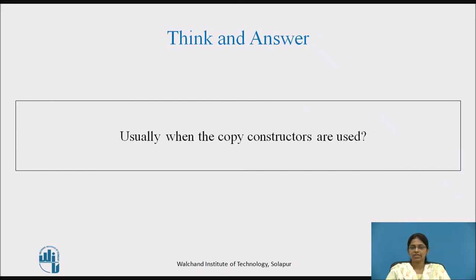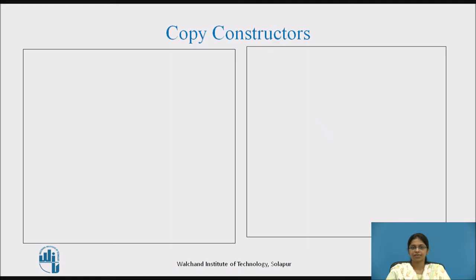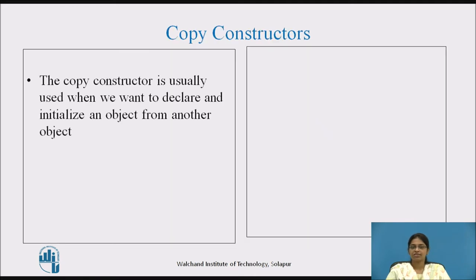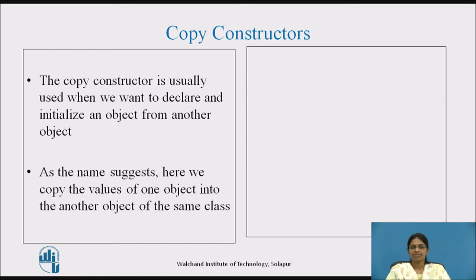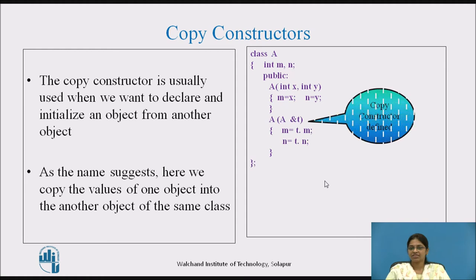When are copy constructors usually used? Copy constructors are used when we want to declare and initialize an object from another object — here we copy the values of one object into another object of the same class. Consider a class 'A' with two data members m and n. Under the public section, we have a parameterized constructor accepting two parameters, initializing m and n to x and y. We also have a copy constructor defined inside the class, which accepts an object as parameter and initializes m and n with the m and n of that other object.